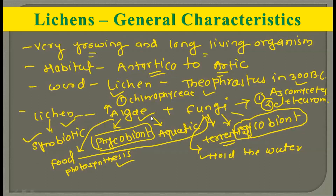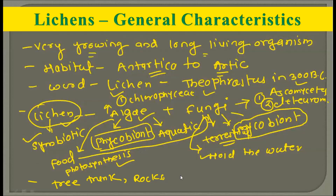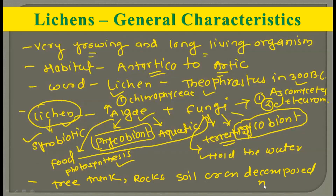The algal partners give food to the fungal partners, while the fungal partners give water to the algal partners. That is why this association is a symbiotic type in which both partners get benefited — this is the evolutionary significance of the combination of algae and fungi in lichens. This combination allows lichens to grow on a wide range of habitats: tree trunks, rocks, soil, or decomposed matter.